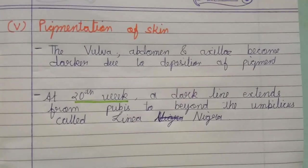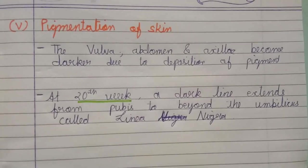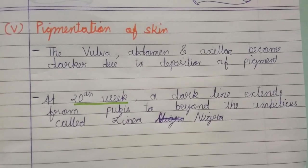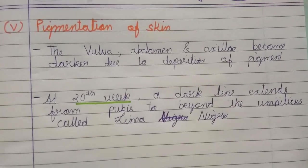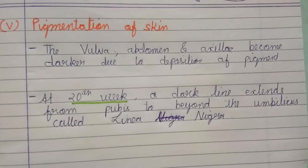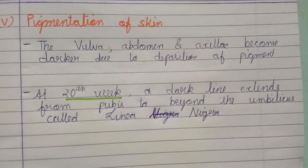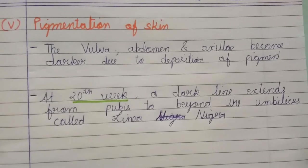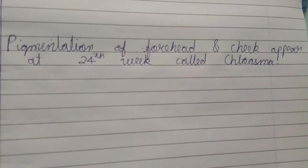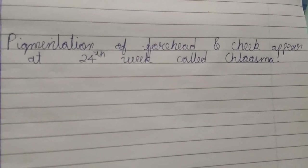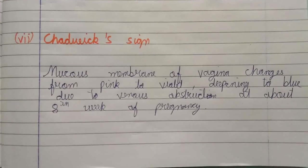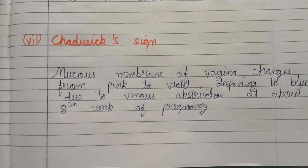The fifth sign is pigmentation of the skin. The vulva, abdomen, and axilla become darker due to the deposition of pigment. At the 20th week, a dark line extends from the pubis to beyond the umbilicus, called linea nigra. Pigmentation of the forehead and cheek appears at the 24th week, called chloasma.